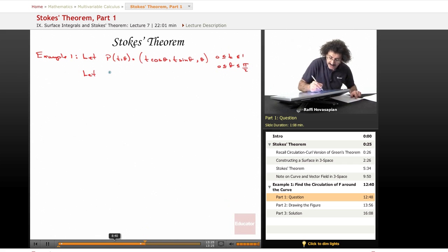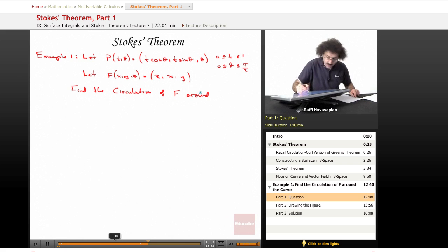And we will let F of x, y, z equal to z, x, and y. Our task is to find the circulation of F around the curve.